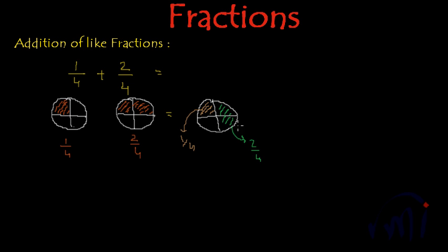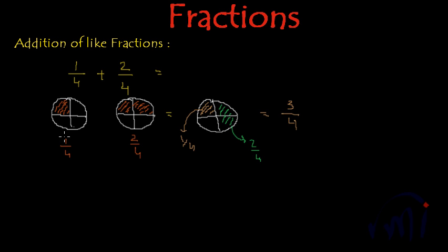So if we talk about the shaded portion now, what does it actually represent? Total shaded portion for the circle or the pizza — how many parts are shaded? 3 parts are shaded out of 4, so this fraction is actually 3 by 4. We shaded fractions equal to 1 by 4 and 2 by 4, and we got that the total actually adds up to 3 by 4.